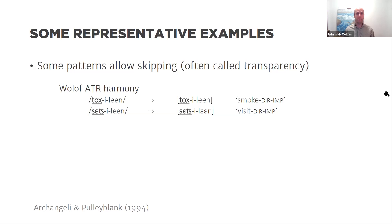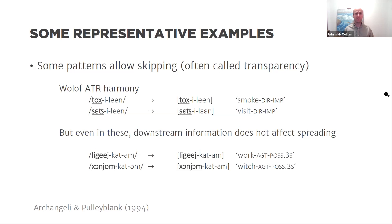Wolof spreads ATR features rightward, but high vowels are immune to harmony and transparent to it. The imperatival suffix alternates based on the ATR values of the root, ignoring the ATR value of an intervening suffix. Crucially, even in these skipping cases, downstream information does not affect spreading. The agentive suffix never alternates for harmony — it is lexically specified — but its presence or absence does not affect harmony application for elements to its left. Harmony is myopic.